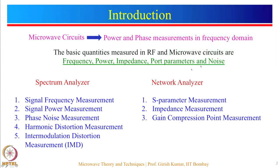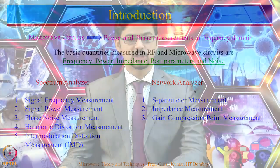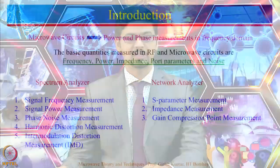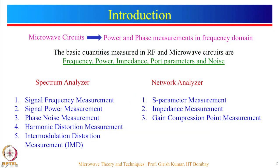These measurements are primarily done using two main instruments: the spectrum analyzer and the network analyzer. The spectrum analyzer is capable of doing signal frequency as well as power measurements fundamentally. It can also measure the phase noise of a signal, and is also used to measure harmonic distortion as well as inter-modulation distortion.